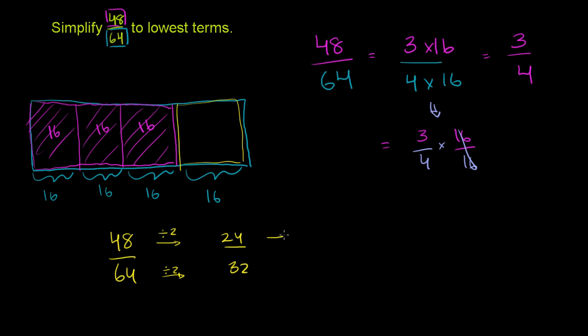So now we divide the top by 4. So we're going to divide by 4. We get 6. You have to do the same to the bottom, to the denominator. Divide by 4, you get 8. So 48 over 64 is the same thing as 24 over 32, which is the same thing as 6 eighths.